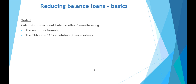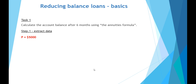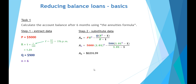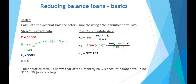As a task, let's calculate the account balance after 6 months using both the annuities formula and the TI-Nspire Finance Solver. Using the annuities formula: principal $5,000, growth factor 1% per month, payments of $500 per month for 6 months. Placing that into the equation, after 6 months Molly's account balance would be $2,331.59 outstanding.